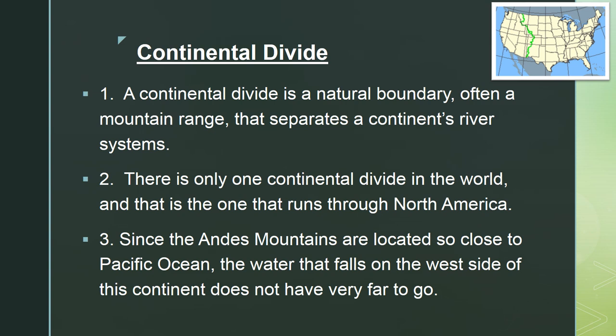Write true or false depending on what you think from the video. Number one: a continental divide is a natural boundary, often a mountain range, that separates a continent's river systems. I hope you said true. Number two: there is only one continental divide in the world, and that is the one that runs through North America. I hope you said false.